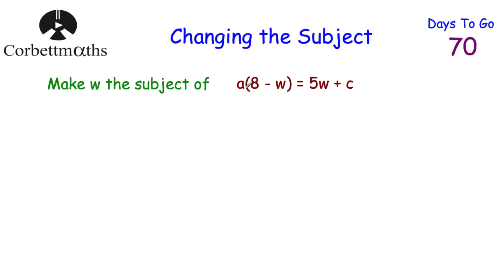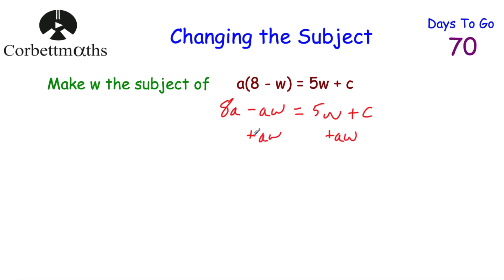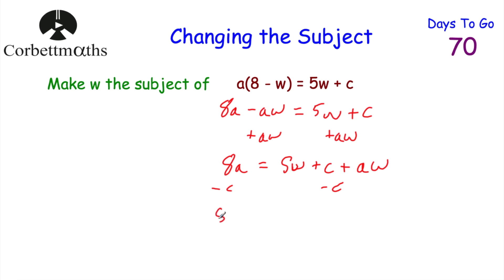This time we've been asked to make W the subject of A(8 − W) = 5W + C. We want all the W's on one side, so let's expand the brackets: A × 8 = 8A and A × (−W) = −AW, giving 8A − AW = 5W + C. To bring all W's to the right-hand side, add AW to both sides: 8A = 5W + C + AW. Then subtract C from both sides: 8A − C = 5W + AW.